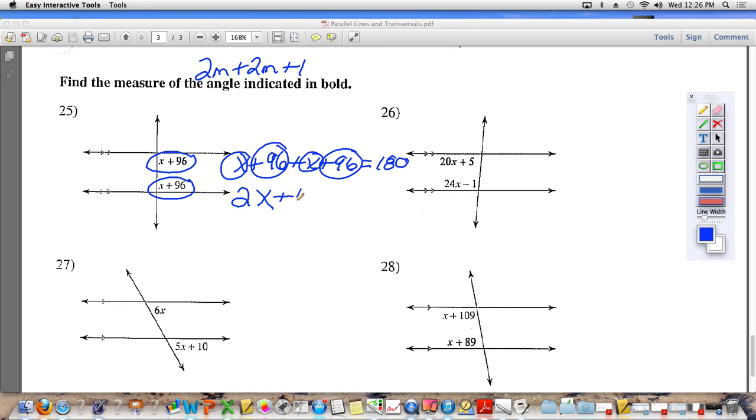So 2x plus 192, we haven't moved things to the other side of the equal sign yet, equals 180. Solve for x. You subtract 192. So 2x is equal to negative 12. You divide both sides by 2. x is equal to negative 12 divided by 2, which is negative 6.